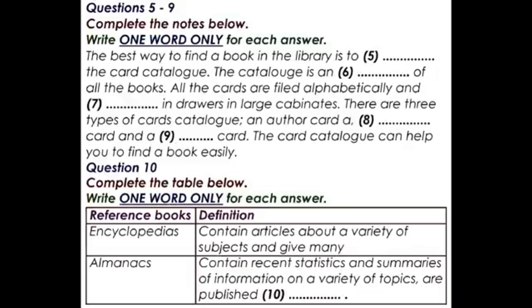The Reader's Guide will give you the names of publications that have carried articles about the subject, the dates and volume numbers of the particular issues in which the articles appeared. You should be aware that reference books may not be taken out of the library under any circumstances. They are used only in the library. That is the end of part one.